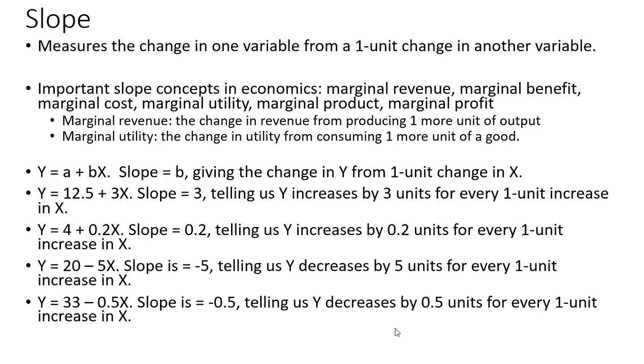Another example: y equals 33 minus 0.2x. The slope here is negative — it is minus 0.5 — telling us that y decreases by 0.5 units for every one unit increase in x. If x increases by two units, y would decrease by a full unit.